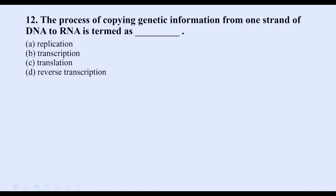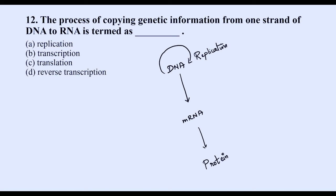Question twelve: the process of copying genetic information from one strand of DNA to RNA is called transcription. In the central dogma of molecular biology: DNA replication produces DNA; transcription produces RNA from DNA; and translation produces protein from RNA. The correct answer is B — transcription.